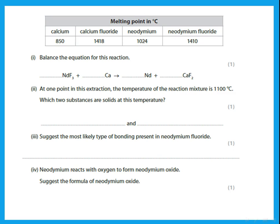Balance the equation for the reaction involving neodymium (Nd). Before the arrow: 3 fluorines in NdF3; after the arrow: 2 fluorines in F2. To balance, put 2 in front of NdF3 and 3 in front of F2 — giving 6 fluorines on each side. But that gives 2 Nd on the left and 3 Ca on the right needs fixing — put 3 in front of calcium and 2 in front of Nd so that both sides are balanced.